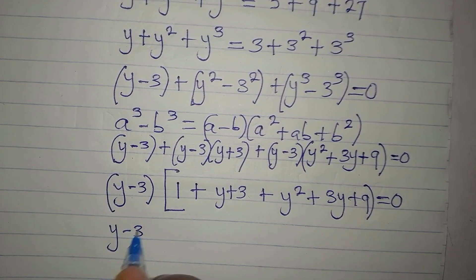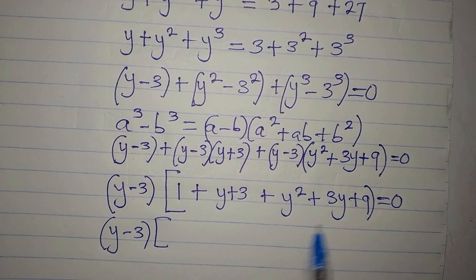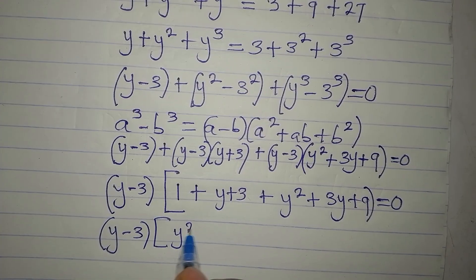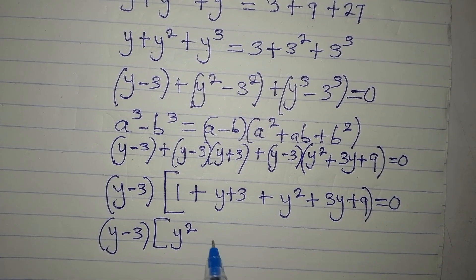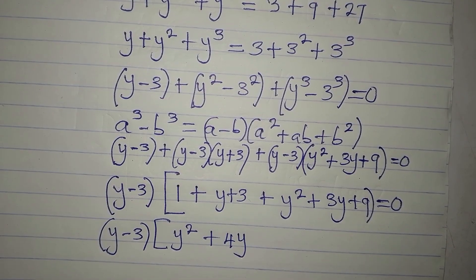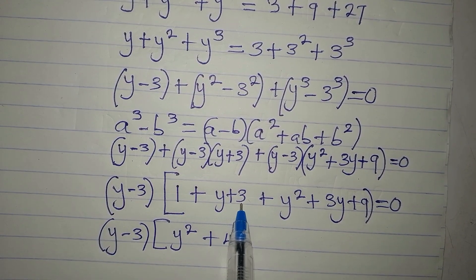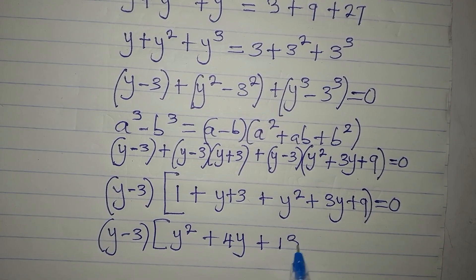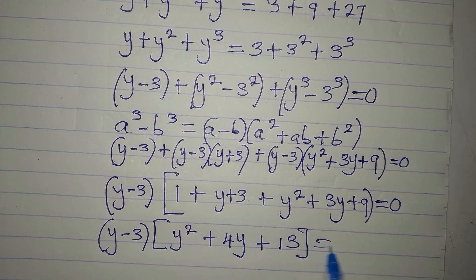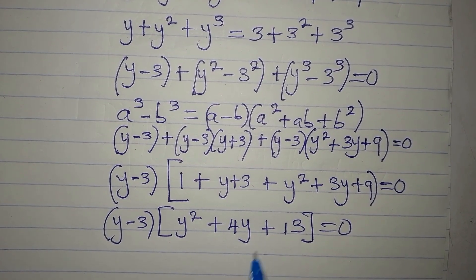Now let's simplify inside the bracket. We have y squared, then 3y plus y gives plus 4y, then 9 plus 3 plus 1 gives 13. So this becomes (y minus 3)(y squared plus 4y plus 13) equals zero. We are multiplying these two factors to get zero.